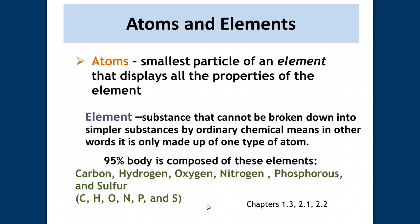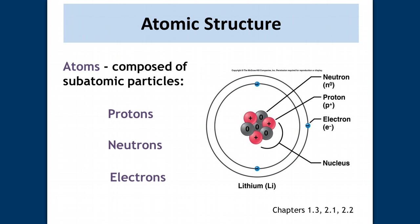The body is composed of — 95% of the body is composed of these elements: carbon, hydrogen, nitrogen, oxygen, phosphorus, and sulfur. These are the chemical symbols for those particular elements. Remember, the element carbon only has carbon atoms, hydrogen only has hydrogen atoms, and so forth.